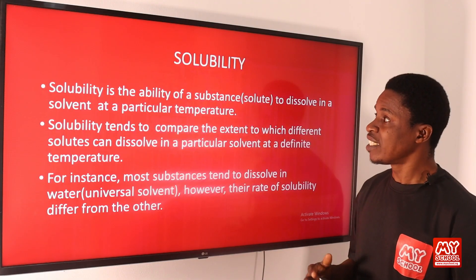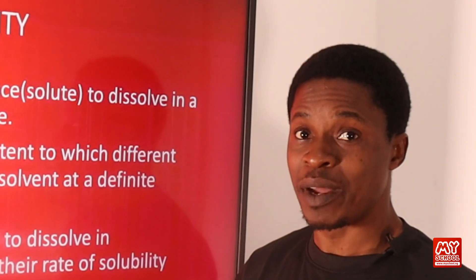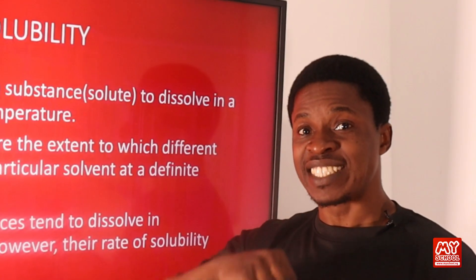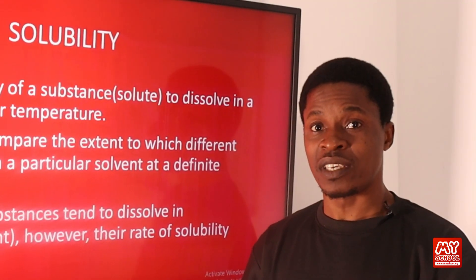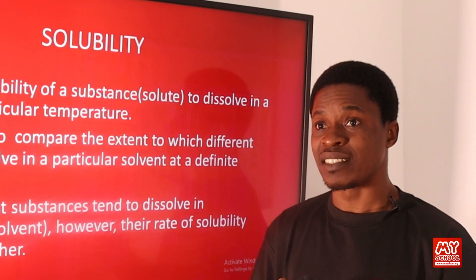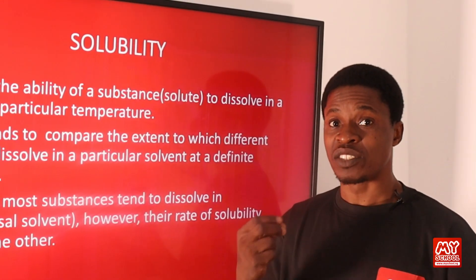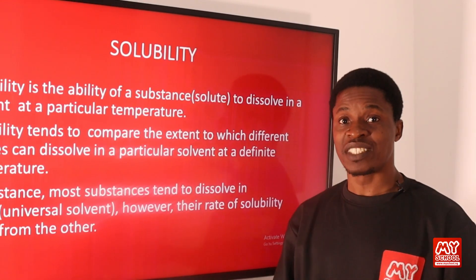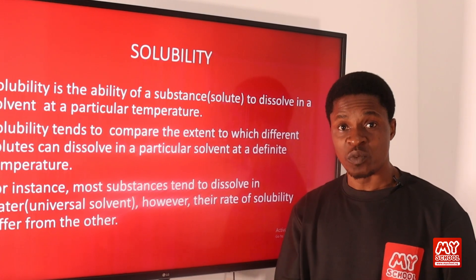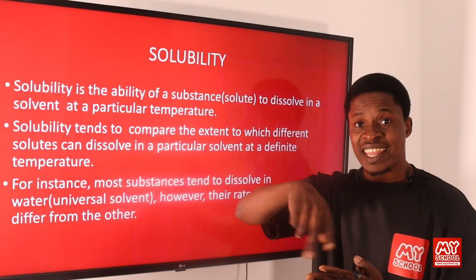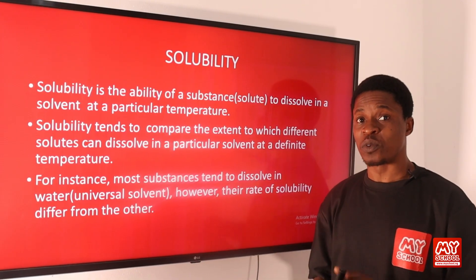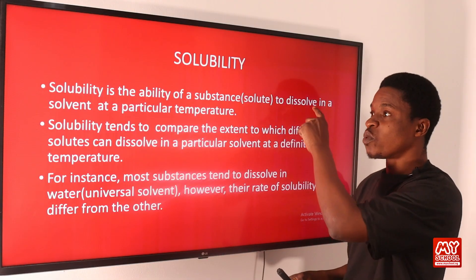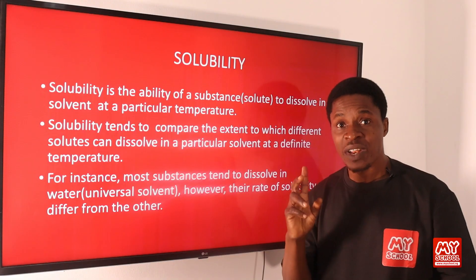Solubility is said to be the ability of a substance — in this case a solute. A solute is that substance that dissolves inside a solvent. In most cases we could have them as solids or liquids. If it is solid, like salt, we are talking about the mass of that substance that dissolves, like your common salt, the one we eat at home — if you put that into water and stir, it dissolves eventually.